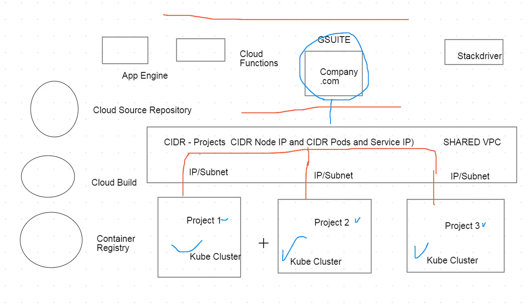From a Kubernetes perspective, there are complementary tools and services we may want to look at. For our pipeline on Google Cloud, we have a couple of choices for our repository or source code — we could put it on Cloud Source Repositories, GitHub, Bitbucket, or whatever works. That's going to be step number one: get our source code.